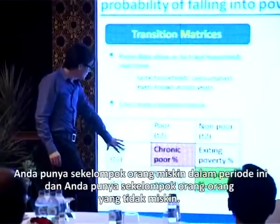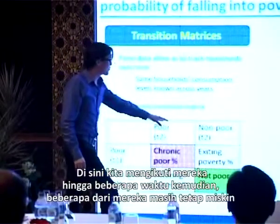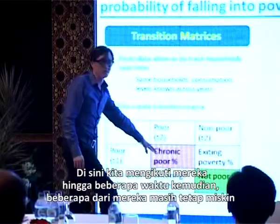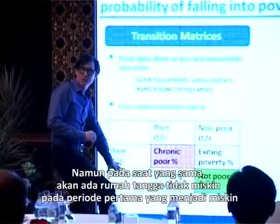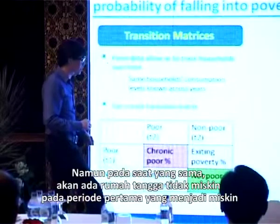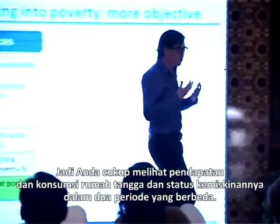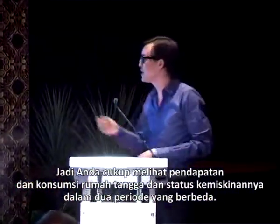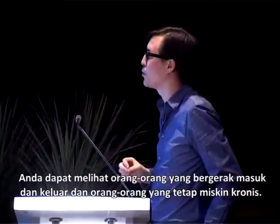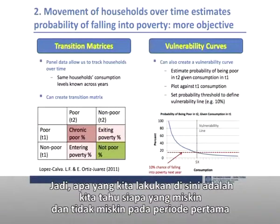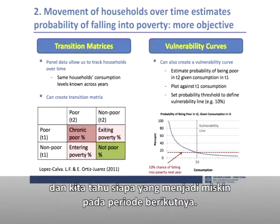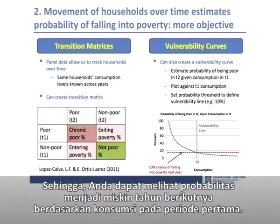This is a transition matrix. In period T1, you have households who are poor and those who are not poor. Following them later, some remain poor — the chronic poor — some exit poverty, some non-poor households enter poverty, and some remain non-poor. You can then create a vulnerability curve: given your consumption in the first period, what is the probability of being poor the next year?